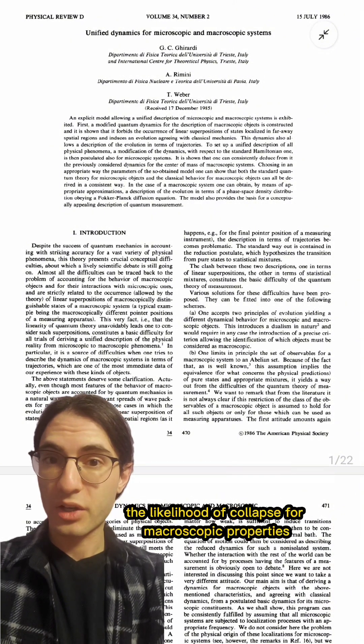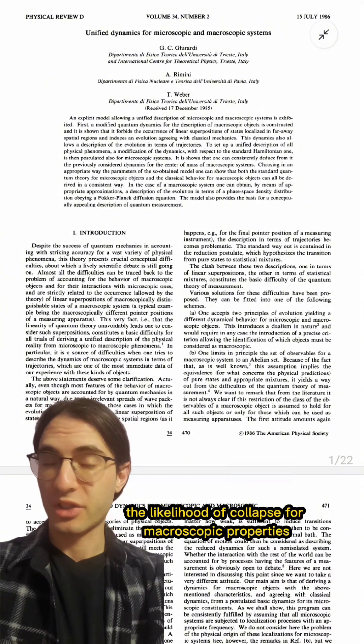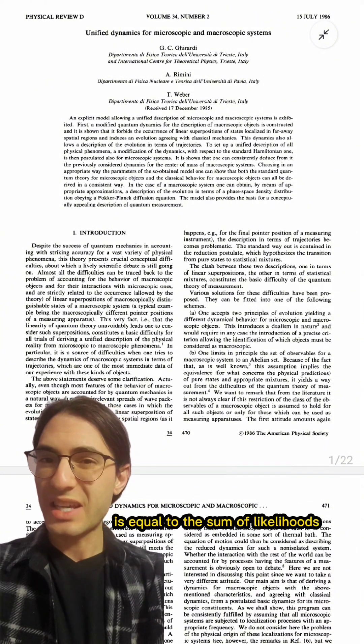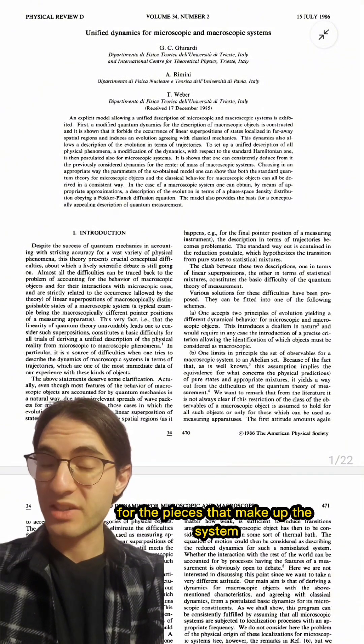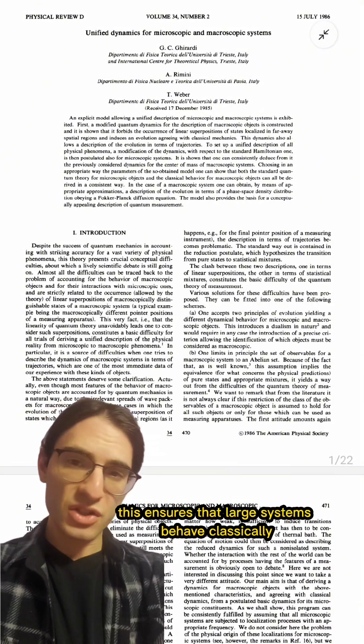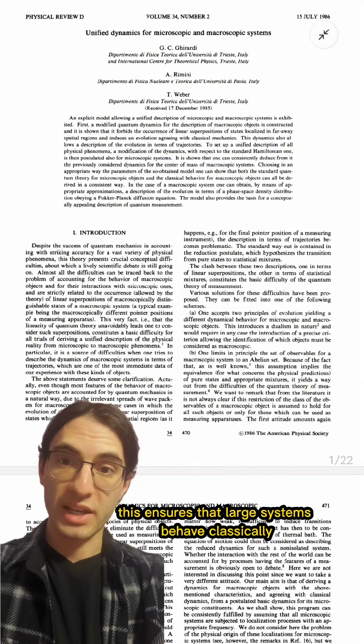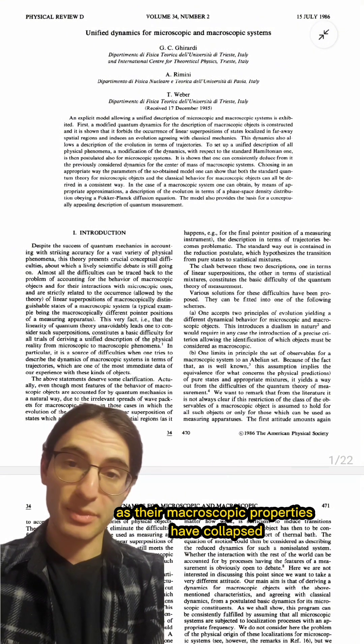A feature of this model is that the likelihood of collapse for macroscopic properties, such as the location of the center of mass, is equal to the sum of likelihoods for the pieces that make up the system. This ensures that large systems behave classically as their macroscopic properties have collapsed.